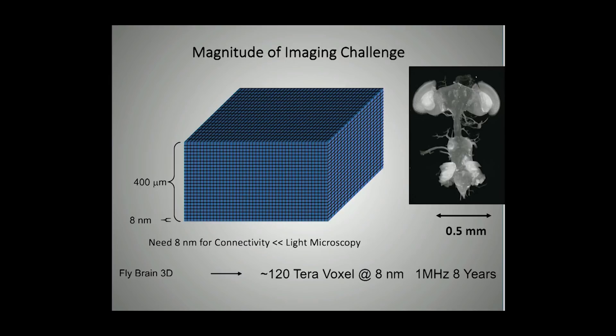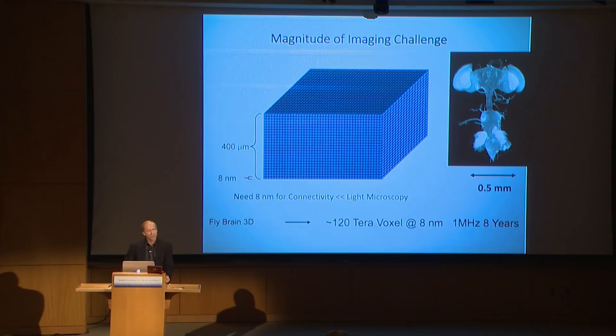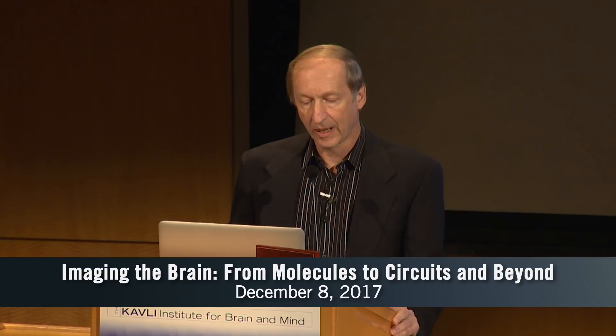Light microscopy can do many other things — image live samples — so all these techniques are very complementary and support each other. So what is FIB-SEM? It's basically an instrument where you use FIB, a focused ion beam, which abrades away the surface a few nanometers at a time.